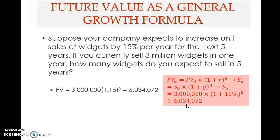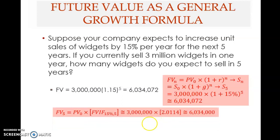So S5 = 3,000,000 × (1.15)^5 = 6,034,072 units. You round to the nearest unit since you cannot have fractions of units. Using the time value table with 15% and 5 years gives a factor of 2.01136, and multiplying by 3 million gives approximately 6,034,000 — which is 72 units short but close enough as an approximation.